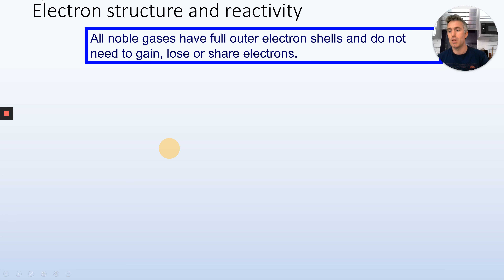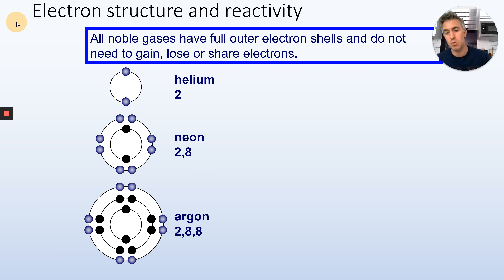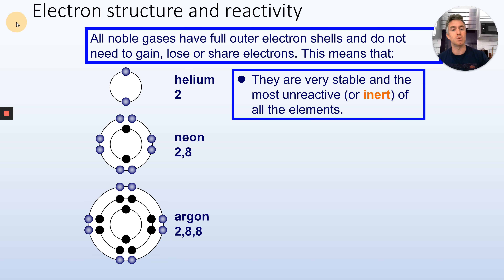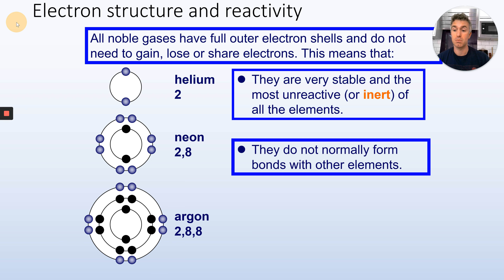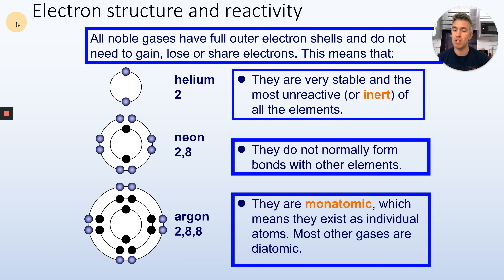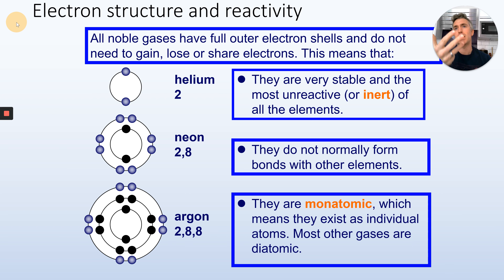Now let's do the noble gases. All noble gases have full electron shells, so they do not need to gain, lose, or share electrons. Helium, neon, and argon — they are full, they are complete, and they are happy. This means they are stable, they don't react, they don't normally form bonds, and they're monatomic, which means they only exist as individual atoms. You have O₂, N₂, I₂, Br₂, and Cl₂ as diatomic molecules, but noble gases are just He, Ne, Ar — they don't need anyone else.